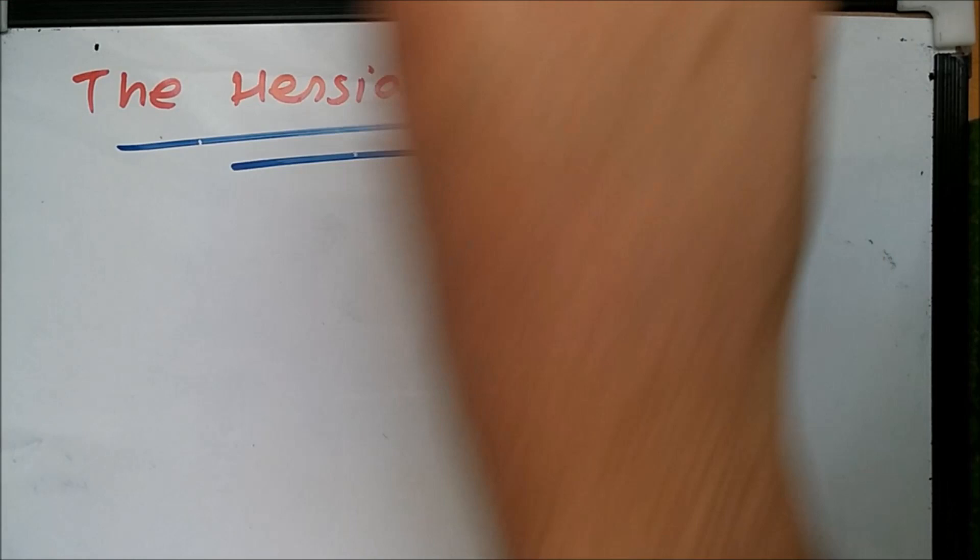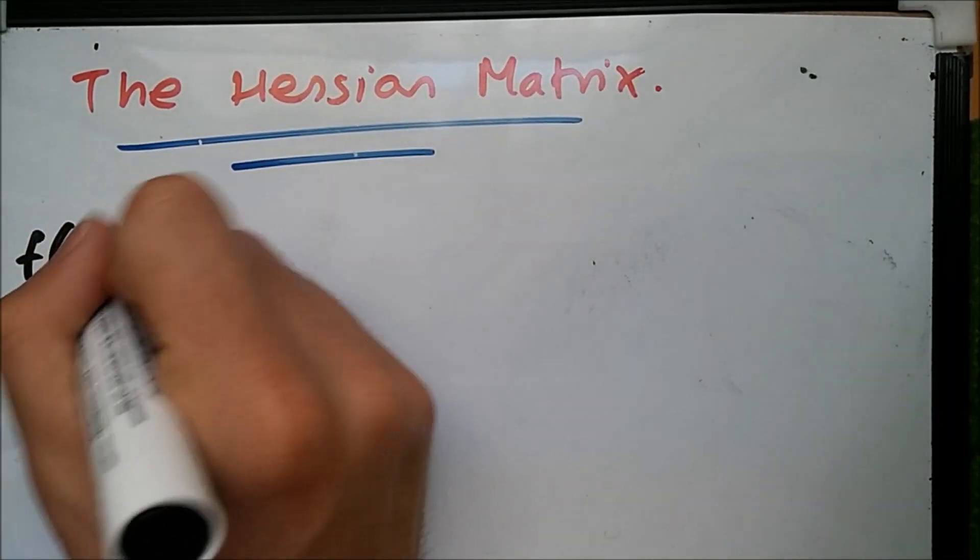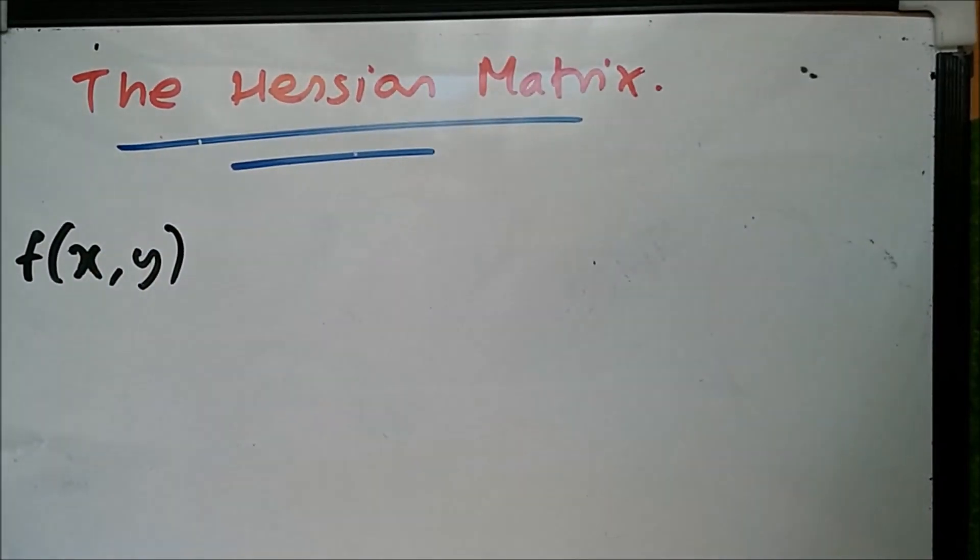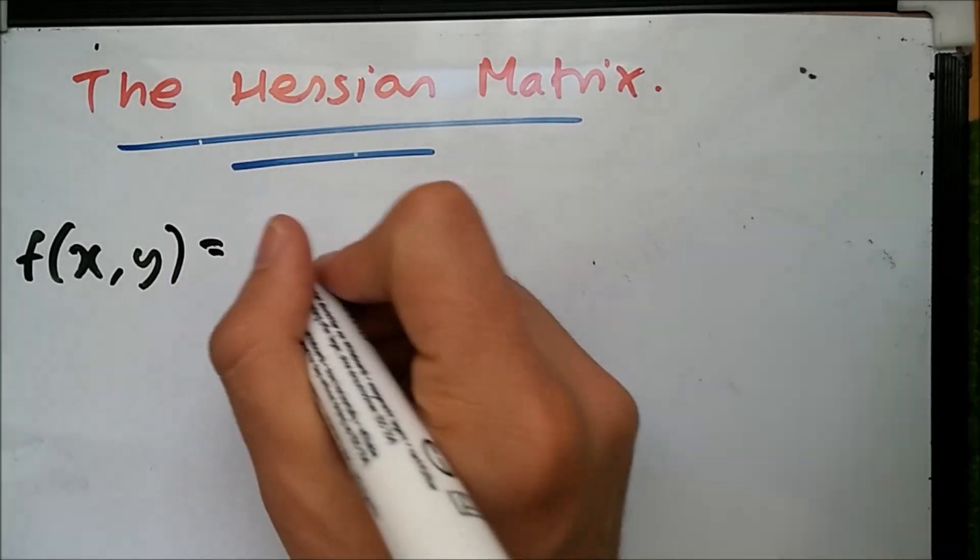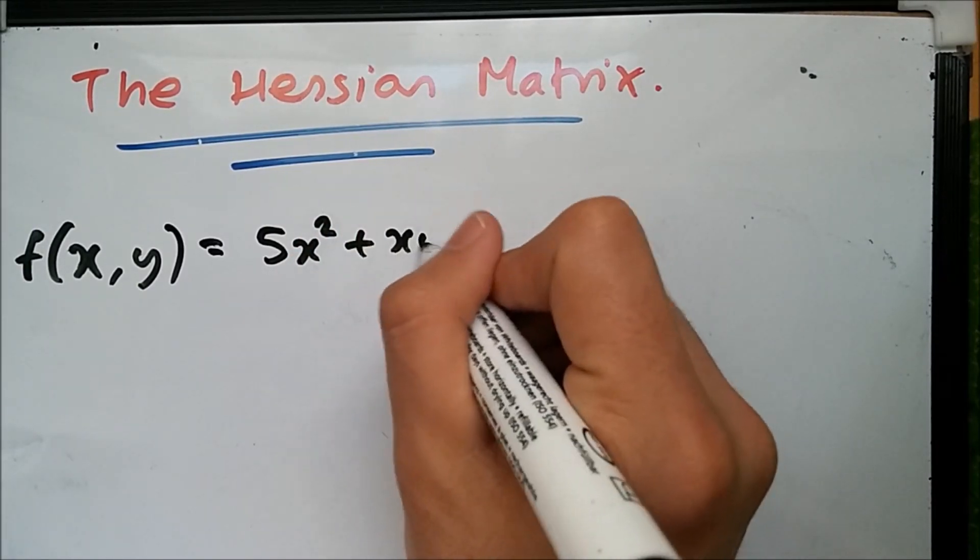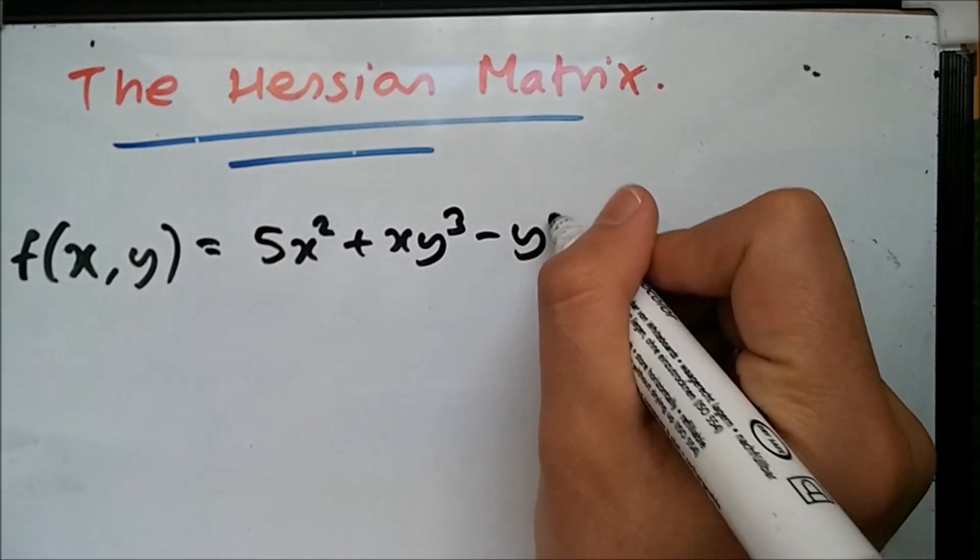Let's pick a nice easy example with a function of just two variables. Instead of x1, x2, I'm going to call them x and y. The function is f(x,y) = 5x² + xy³ - y².